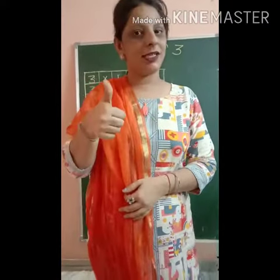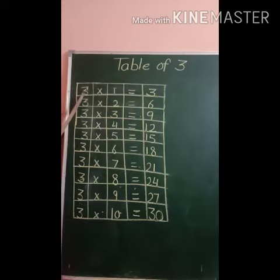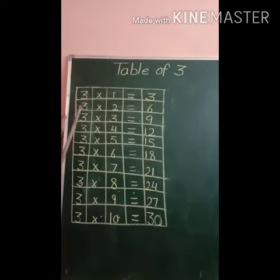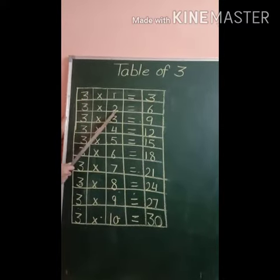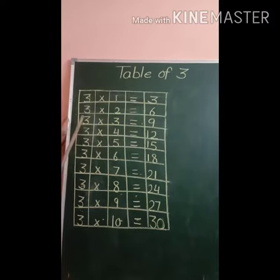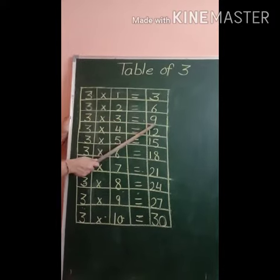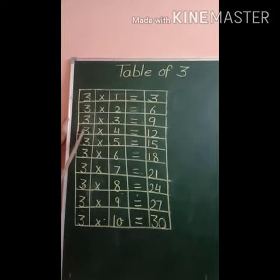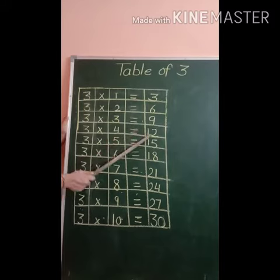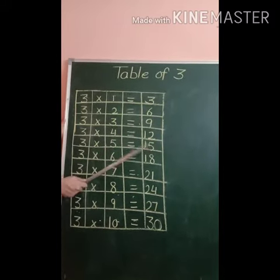Let's start. 3 1's are 3, 3 2's are 6, 3 3's are 9, 3 4's are 12, 3 5's are 15.